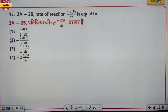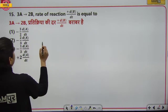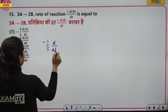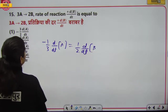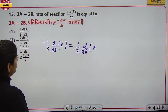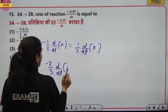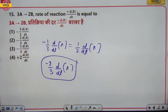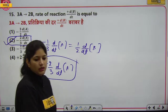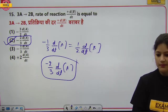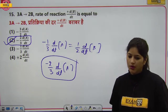Reaction: 3A → 2B। Rate expression: −(1/3)d[A]/dt = (1/2)d[B]/dt। तो d[B]/dt = −(2/3)d[A]/dt। यह second option है, answer option 2 है।